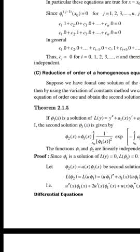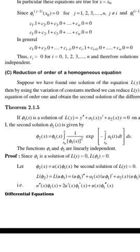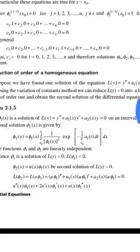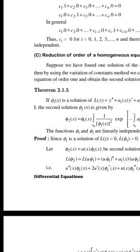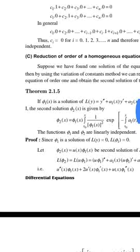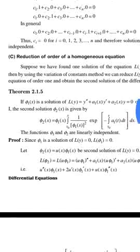Theorem: If φ₁(x) is a solution of L(y) = y'' + a₁(x)y' + a₂(x)y = 0 on an interval I, and φ₁(x) ≠ 0 on I, then the second solution φ₂(x) is given by: φ₂(x) = φ₁(x) · ∫[x₀ to x] (1 / φ₁(s)²) · exp(−∫[x₀ to s] a₁(t) dt) ds.